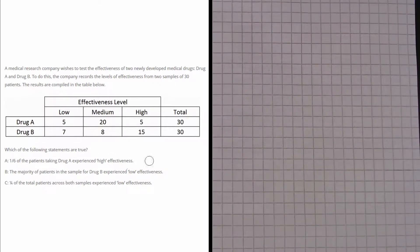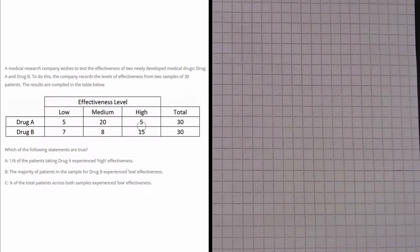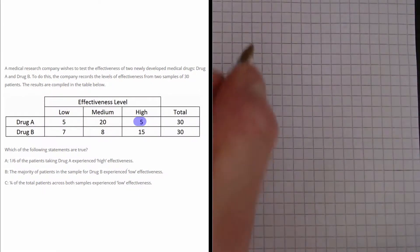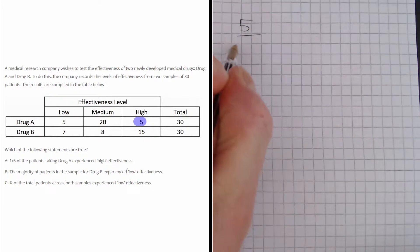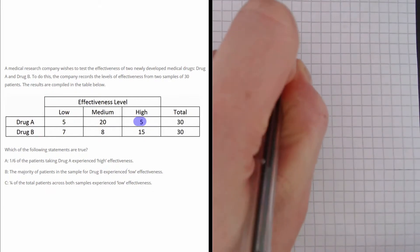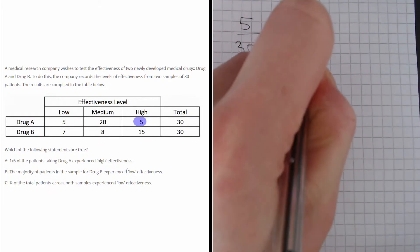Let's jump right in at Part A. Part A says that a sixth of the patients taking drug A experienced high effectiveness. We can see from the table, if we look for drug A high effectiveness, we have five. So that's five out of a total of 30, which of course reduces to a sixth.